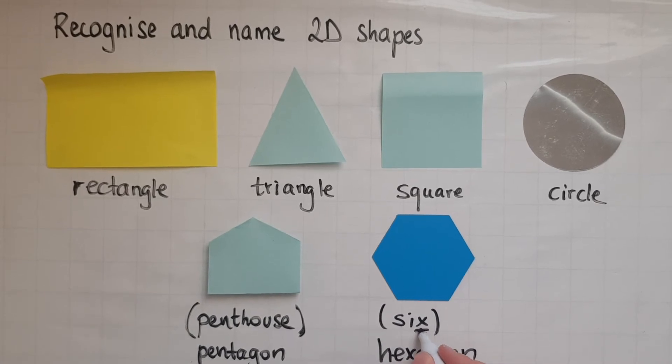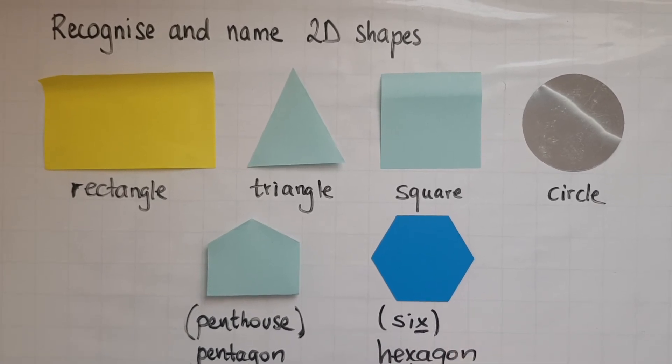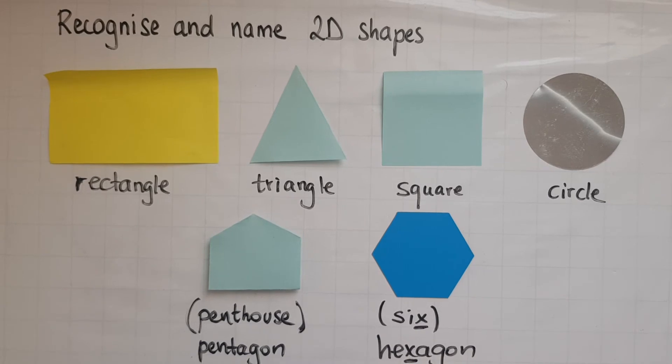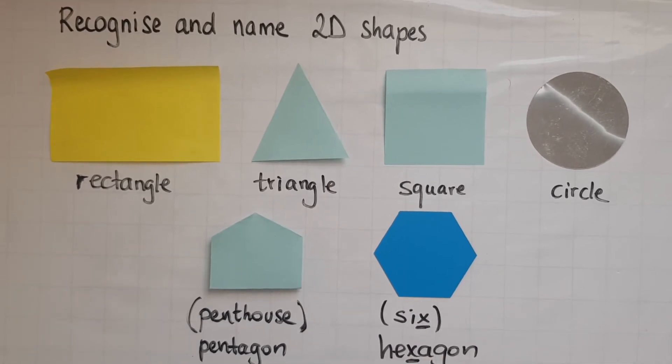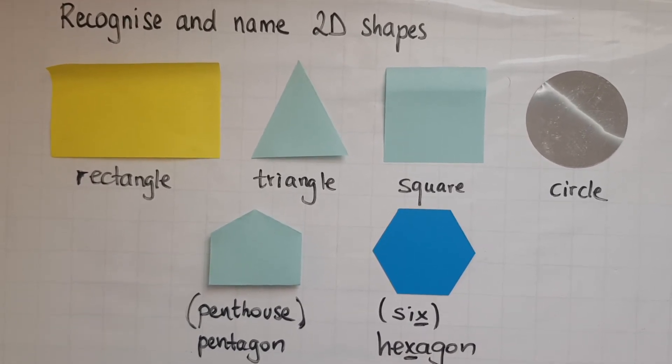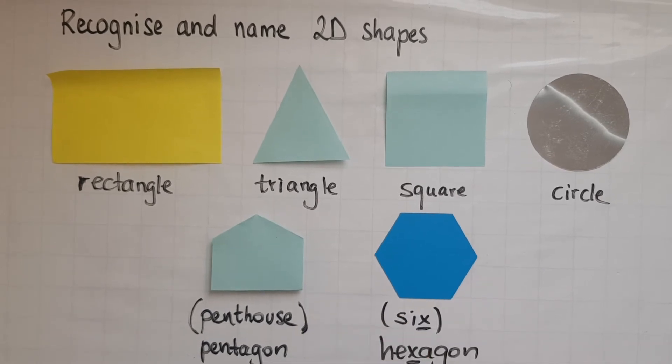So, six has this x and hexagon has an x there as well. That should be a clue to help you remember that a hexagon has six sides.